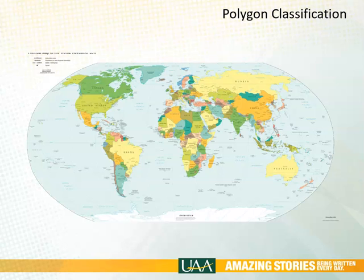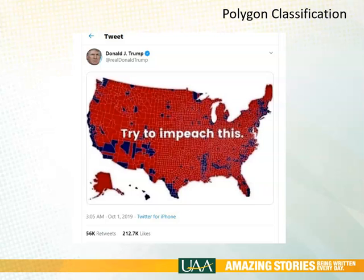Here's polygon data that uses unique symbols as well, where the colors of countries mean nothing in particular — they just allow us to differentiate one country from another. This map, on the other hand, uses just two symbols, either red or blue, to show the counties that were carried by President Trump.